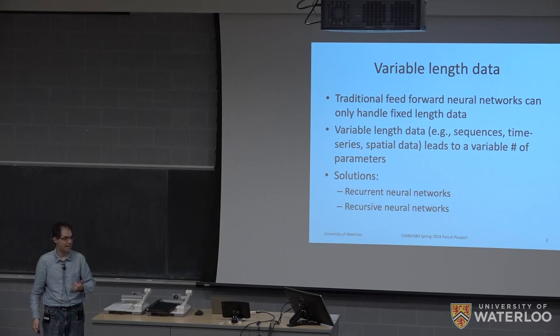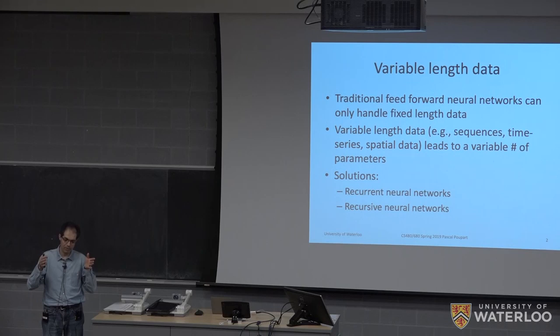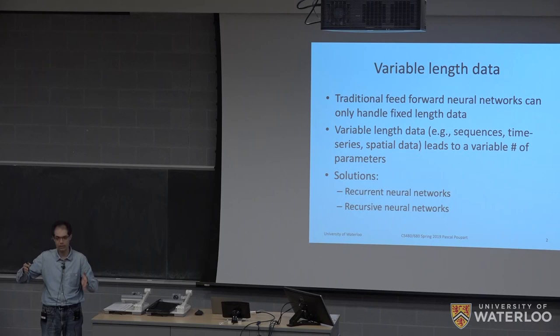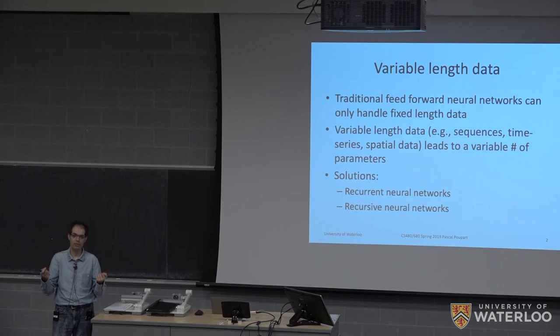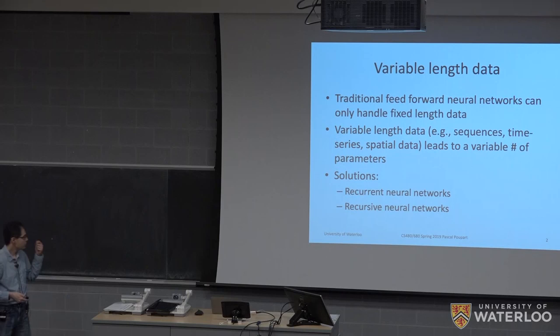Another example is machine translation: sentences in English translated to French may have 4, 10, or 15 words each. If we use a feed-forward neural network assuming fixed length, there's a problem. We could use padding or truncation, but that's not ideal. We want models that adjust with the length of the sequence.